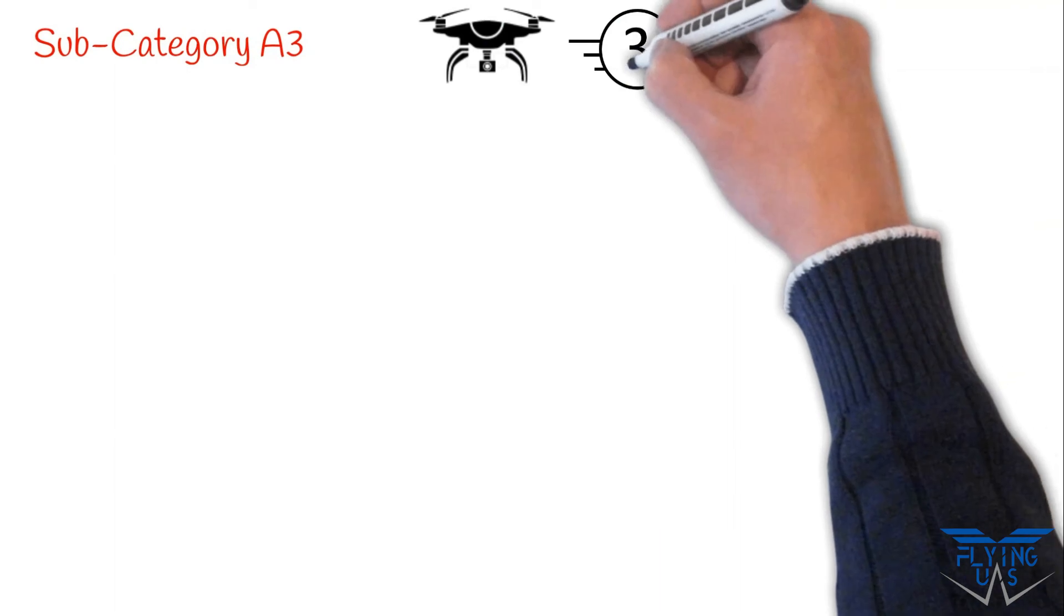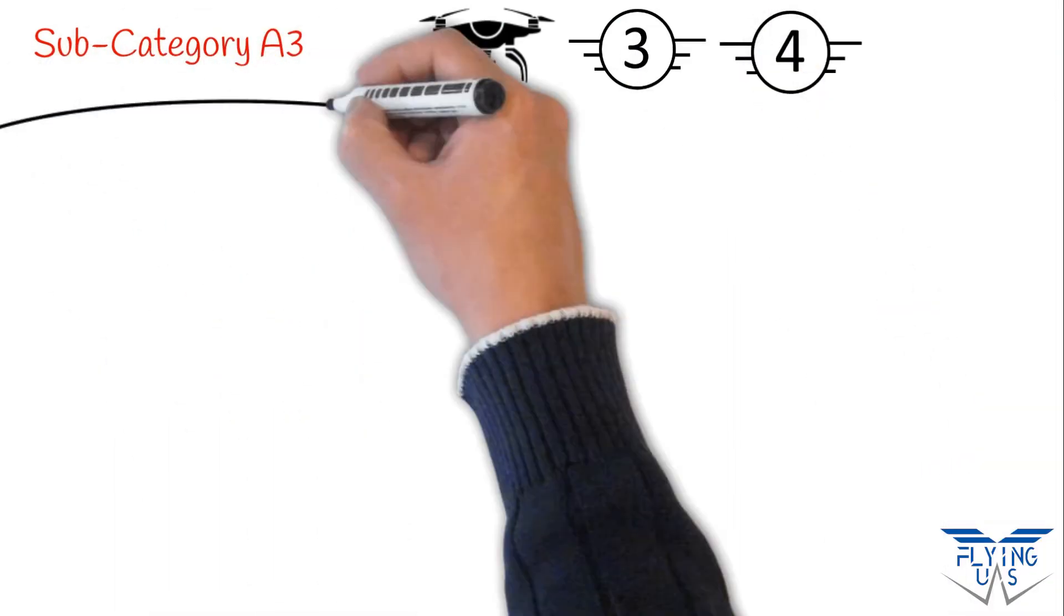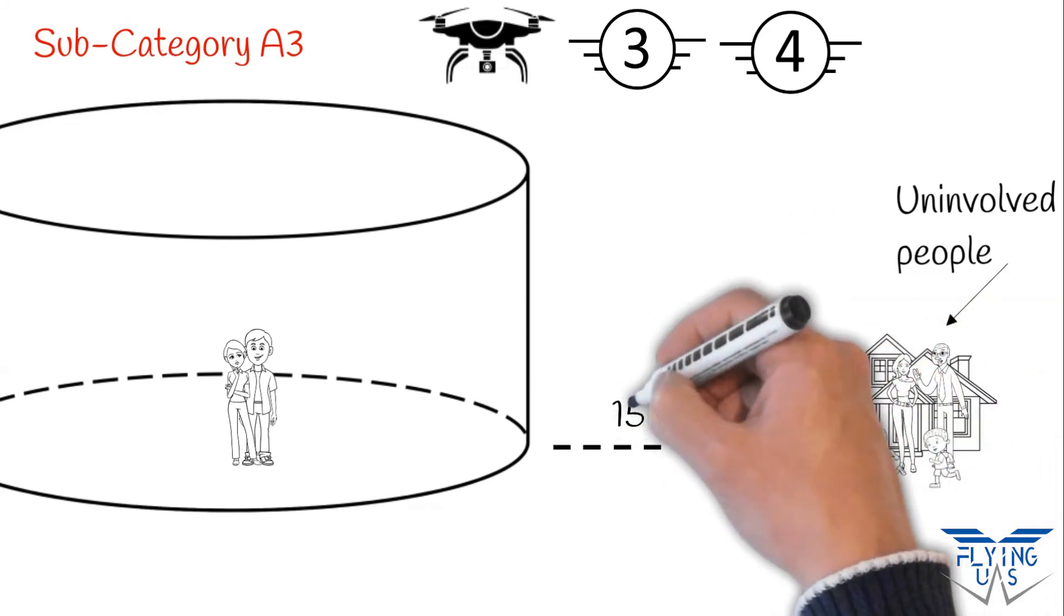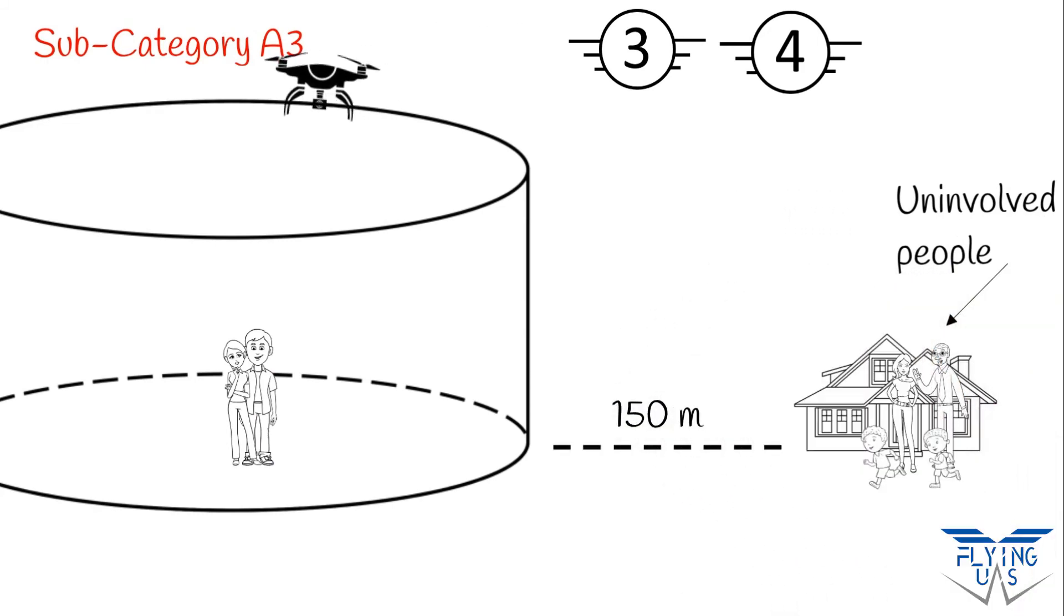Subcategory A3 can be used by drones weighing less than 25 kilograms or with drones belonging to classes C3 and C4. Neither assemblies of people nor uninvolved people can be overflown. Besides, a safety distance of at least 150 meters from residential, commercial, industrial, or recreational areas must be maintained.